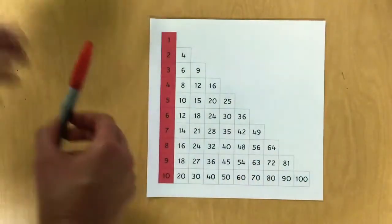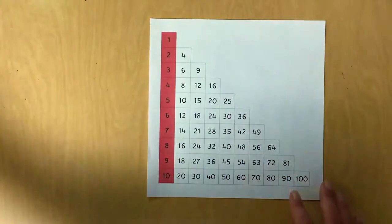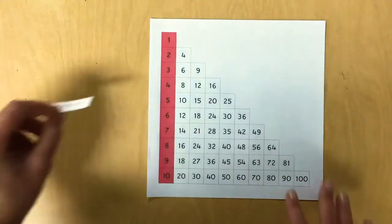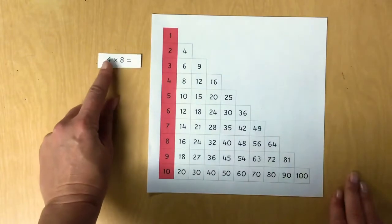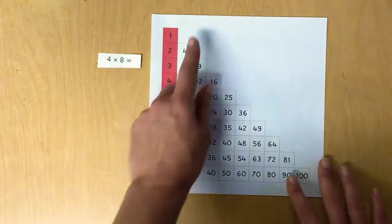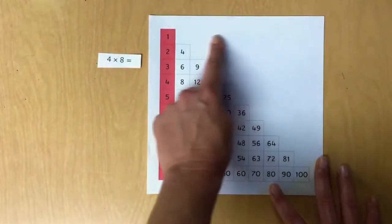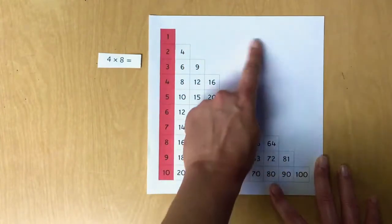All right, I'm going to set these aside and let's look at how this works. Here we have a problem: four times eight equals blank. But we don't have that blue bar across the top and we don't have half of our numbers in the middle.